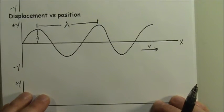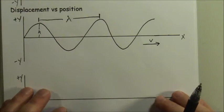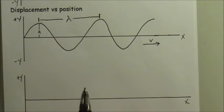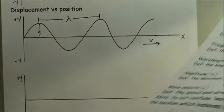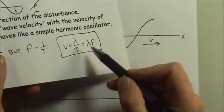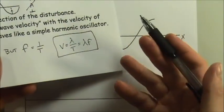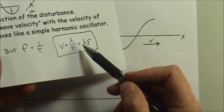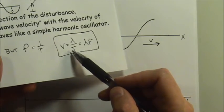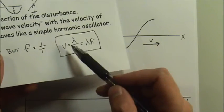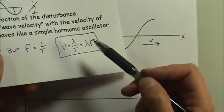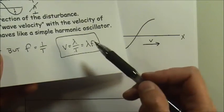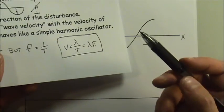So this graph gives me new information I couldn't get from the previous one, but there's a trade-off. In the displacement versus time graph I had the period and therefore the frequency, but no wavelength. In the displacement versus position graph I have the wavelength, but I have no period, no frequency, and no wave velocity.